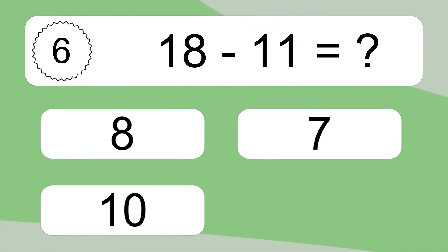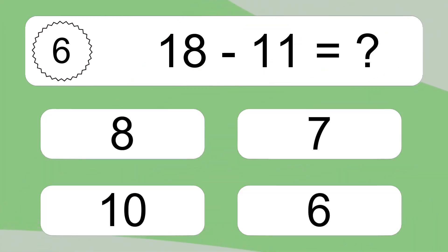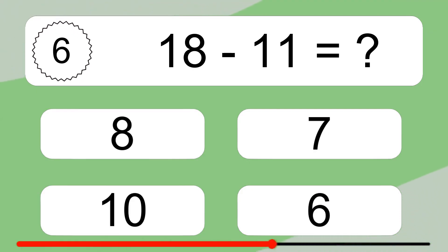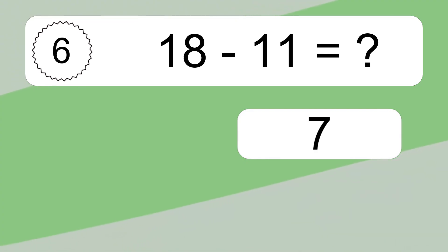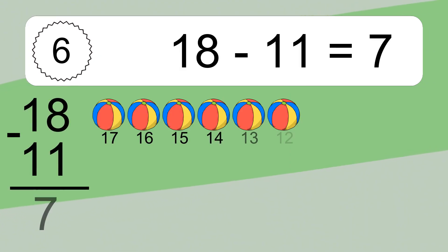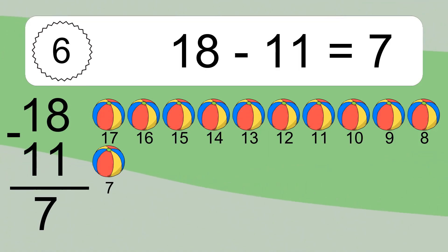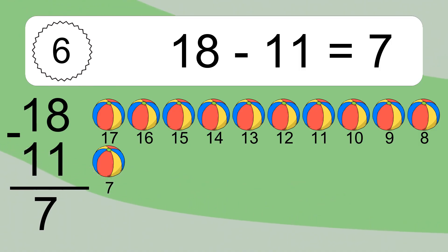18 minus 11 equals what? 18 minus 11 equals 7. Let's count it. 17, 16, 15, 14, 13, 12, 11, 10, 9, 8, 7.